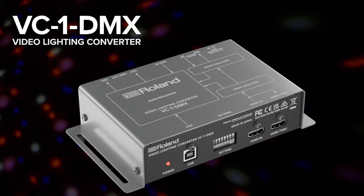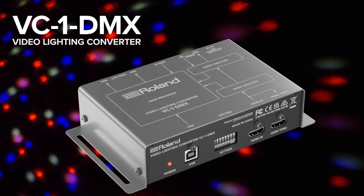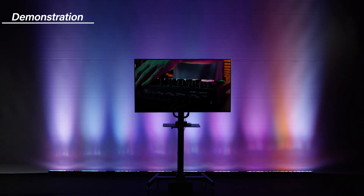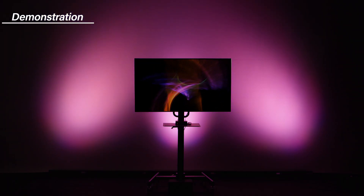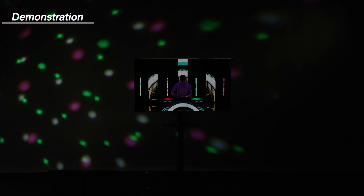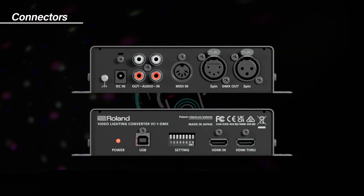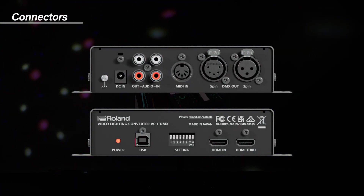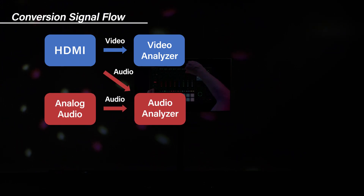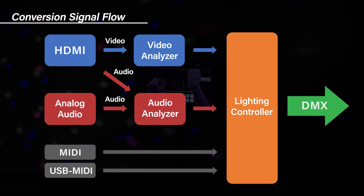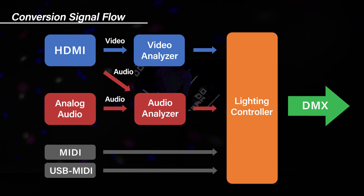Automate your event lighting with the VC1-DMX to create an integrated visual experience with video and lighting. Analyze and convert HDMI signals, analog audio, MIDI, and USB inputs to DMX512 in real-time.